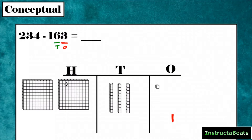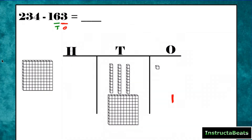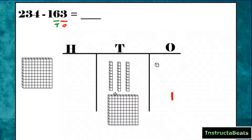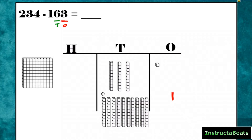We have to go next door to the hundreds place and unbundle one of these hundreds and give it to our tens place. If you look at this hundred, you can see that it has 10 sticks — 10 place value sticks that make up this hundreds grid. So we take this 100 and turn it into 10 tens. We unbundled it, unwrapped it, and made it into 10 ten-blocks. Now I have 13 ten-blocks, and I can take away six because I have enough.